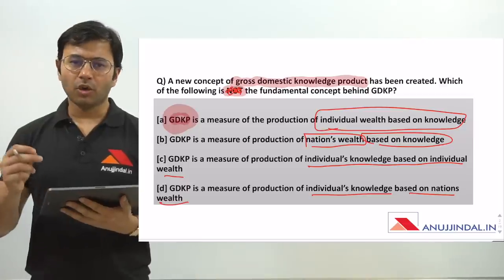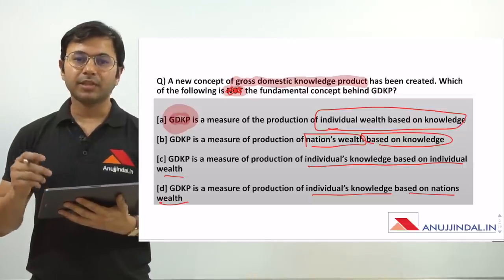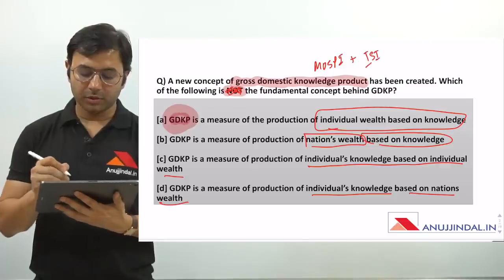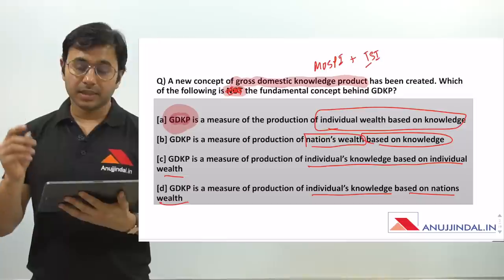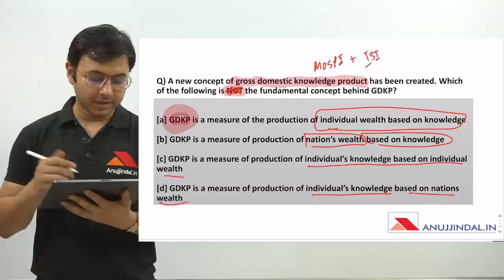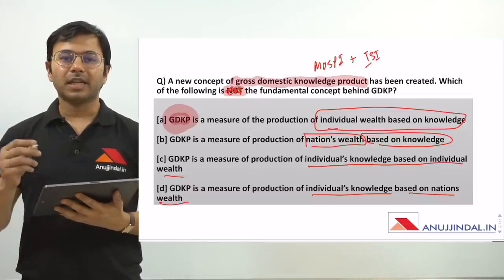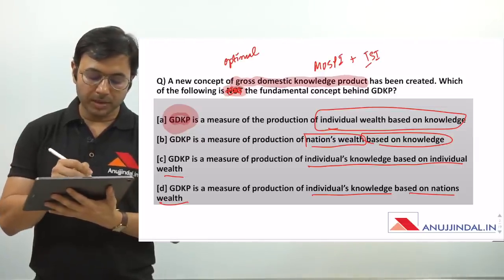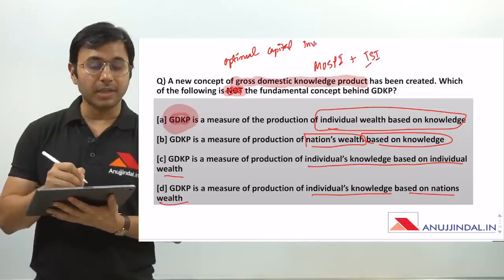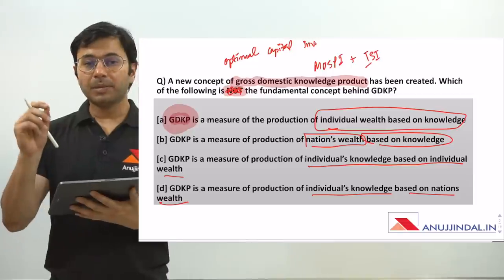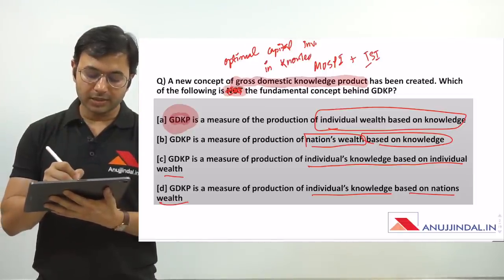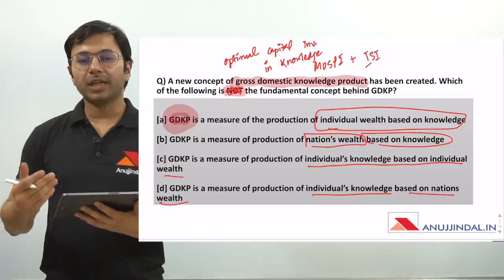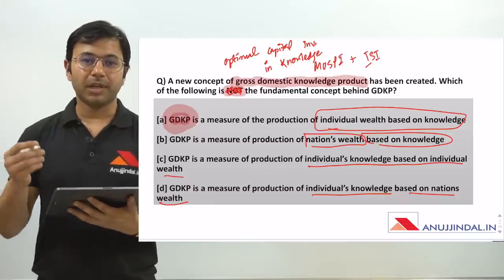Before discussing the answer, let's talk a bit about GDKP. GDKP is a concept developed by the Ministry of Statistics and Programme Implementation plus the Indian Statistical Institute. They recently came out with this concept. The second important element of GDKP is that it helps the private sector identify what is the optimal capital investment in knowledge — that means enhancing knowledge of its human resources — which can give more output than capital investment elsewhere.